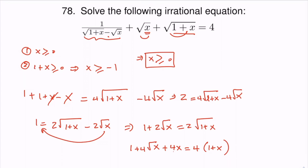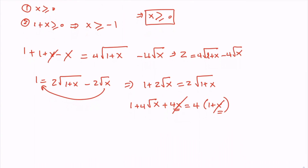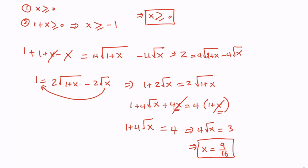Now this four x will cancel with the other four x, so those two cancel each other, and we will have one plus four root of x equals four, which gives four root of x equals three, and therefore x equals nine over sixteen. Since x is greater than or equal to zero, this is a valid answer.